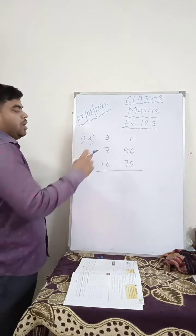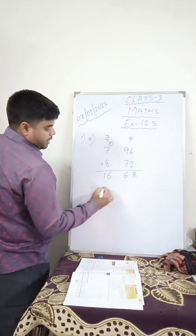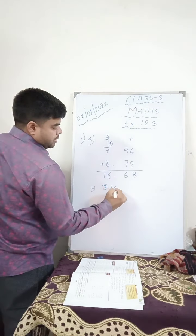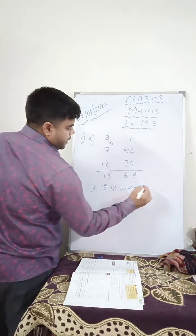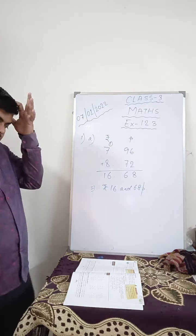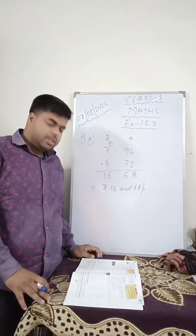Now, you do simple addition. 8. 9 plus 7 is 16, one in hand. 1 plus 7 is 8, 8 plus 8 is 16. So you write here rupees 16 and 68 paisa. I hope all of you have understood this. You will do simple addition.